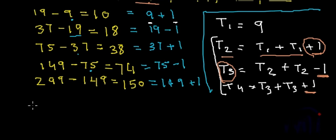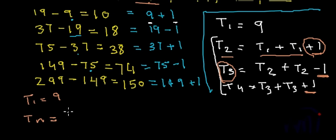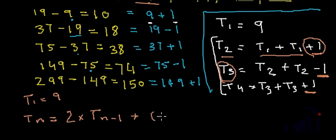So let's write the logic to find the terms of this pattern. t1 is equal to 9. And the general formula is: tn equals 2 times the previous term, that is t(n−1), plus (−1) to the power n.